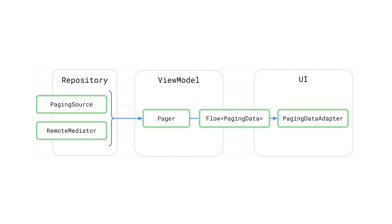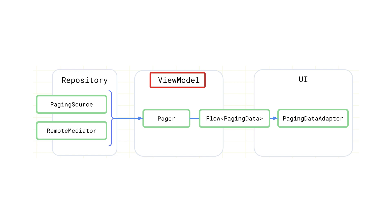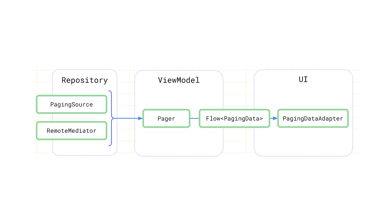It also fits in our MVVM architecture, where we split code responsibility into repositories, view models, and UI adapters. In our MVVM architecture, we use the paging library as the funnel between the data layer and the UI layer.